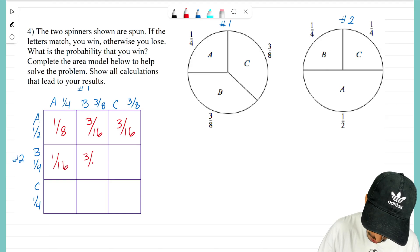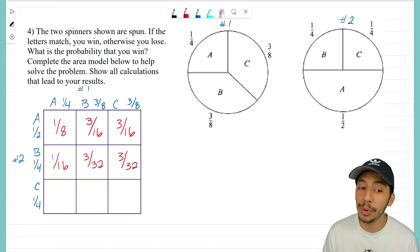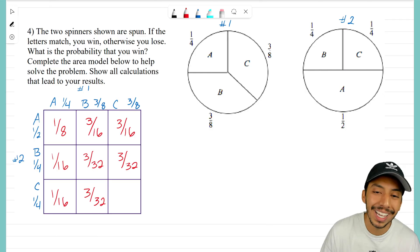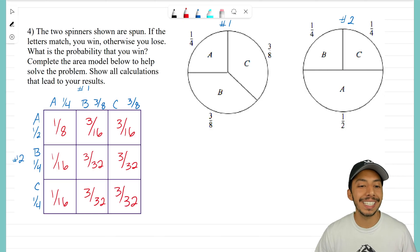One more row to figure out. So this bottom one is—oh look, one-fourth times one-fourth again—so one-sixteenth. Three-eighths times one-fourth, still three over thirty-two. And we end with again three over thirty-two. Now we have our area model all filled out, and you might be thinking, okay, we answered the question, we're good. But no, we still haven't answered the question.